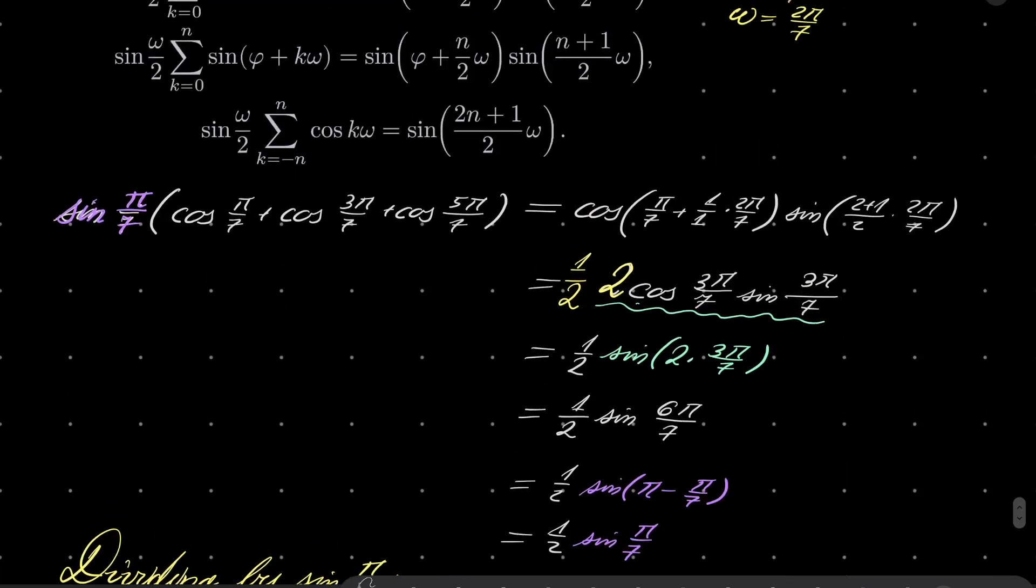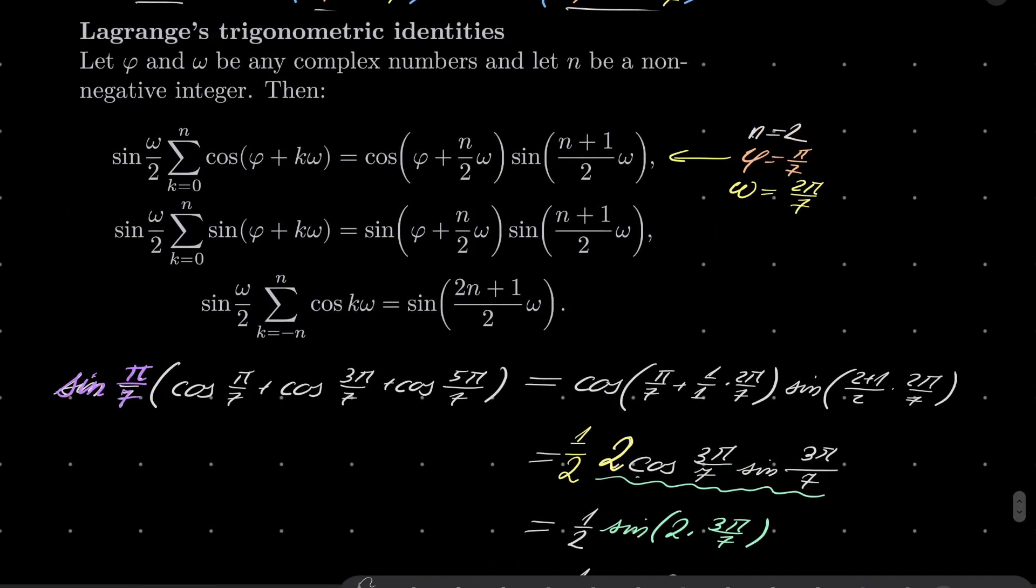So if you are preparing for some type of competition, if you are studying trigonometry, pay attention to these three identities. They are very useful in the problems of the type when we have sum of the same trigonometric functions. If the arguments differ by the same amount, if the arguments of our functions form an arithmetic progression, then Lagrange identities can be very useful.